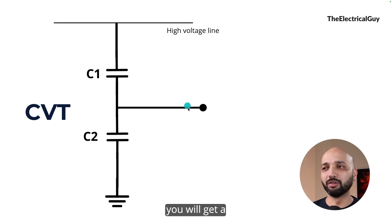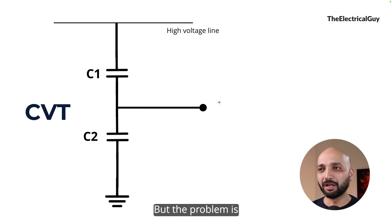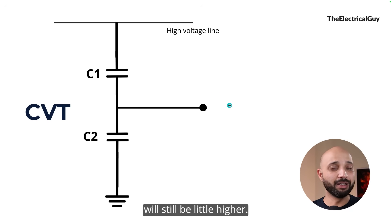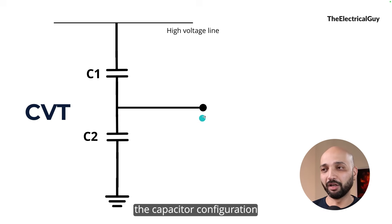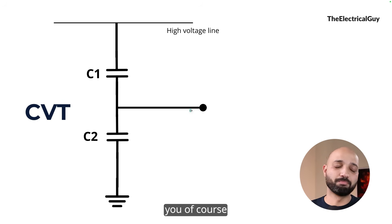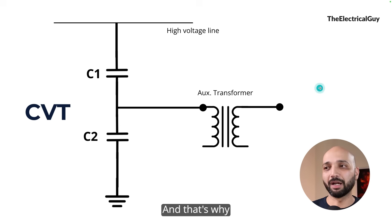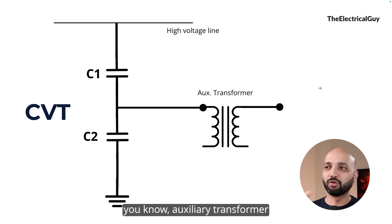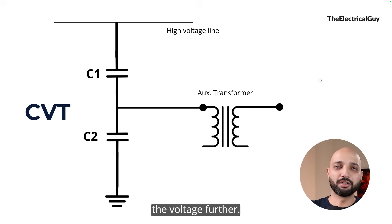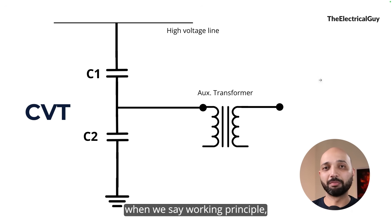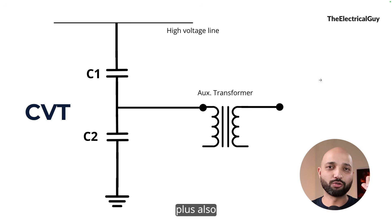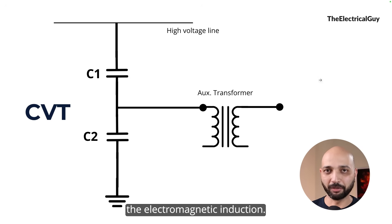When you connect a tap in between the capacitors, you get a much lower voltage. However, this intermediate voltage will still be somewhat high — maybe 10 kV, 15 kV, or 20 kV depending on the capacitor configuration. You cannot give that voltage directly to relays or meters, so we further step it down using a small auxiliary transformer placed at the bottom of the CVT. That's why the working principle of CVT involves both voltage division by capacitor and electromagnetic induction.